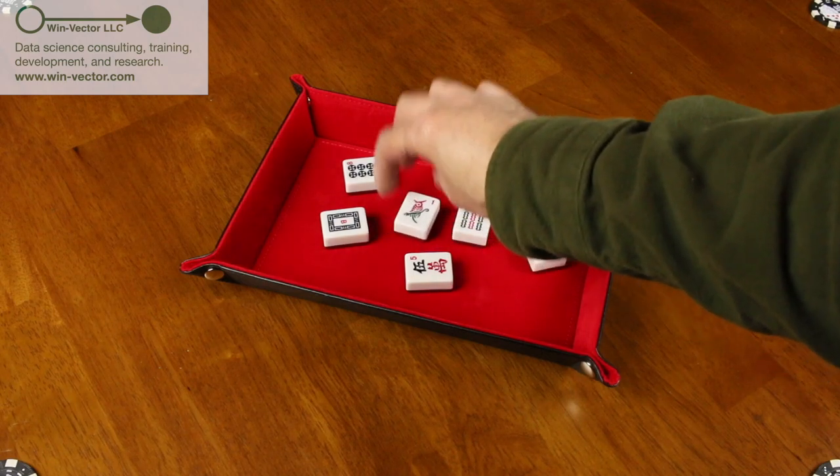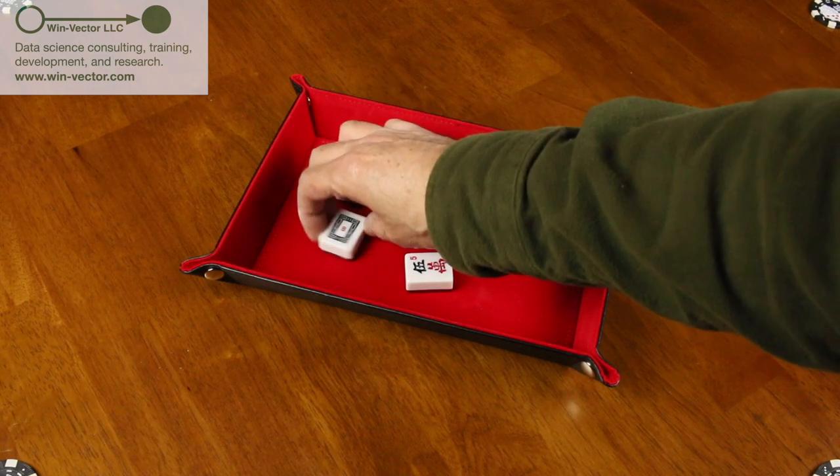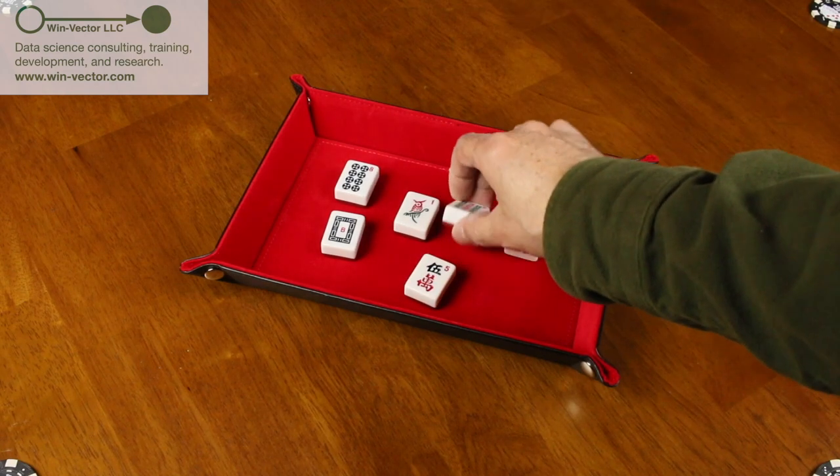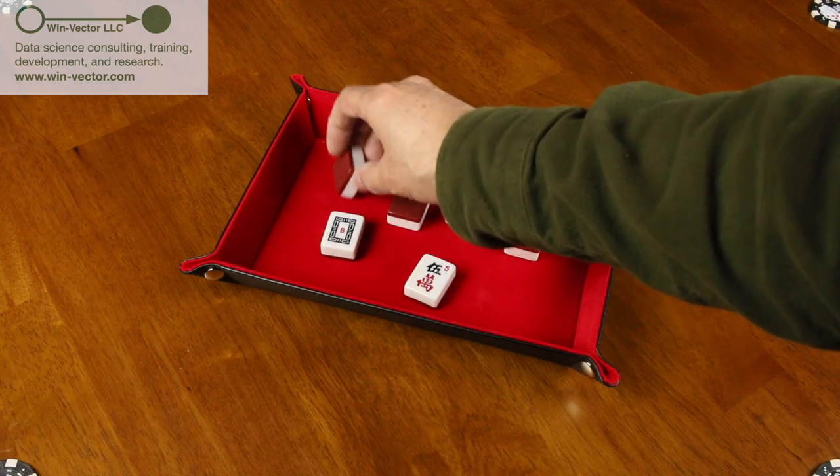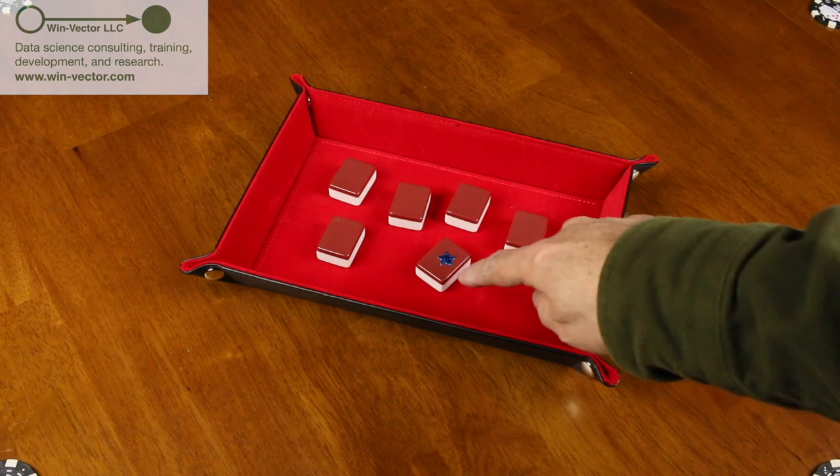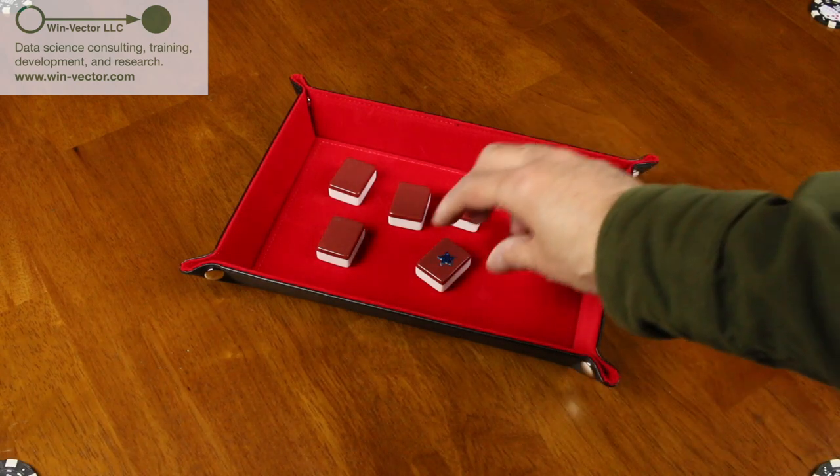On one side we have what we know about the tile, the pattern, the digits, and what it is. On the other side we have the supervision or what we wish we know is whether there's a blue star on the back of the tile or not, the blue star being the tile that pays off.